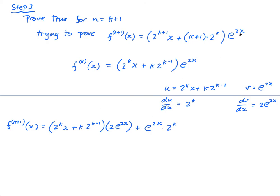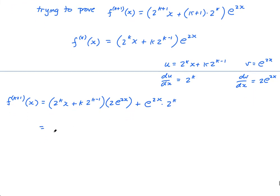At this point I look at this and see there's an e^(2x) outside, so I'll take out my e^(2x), and inside the square bracket I'll put: there's a 2 here, so it's 2 times (2^k · x plus k · 2^(k−1)) plus 2^k. Just make sure you know how I've gone from there to there. Now I have my e^(2x) outside.